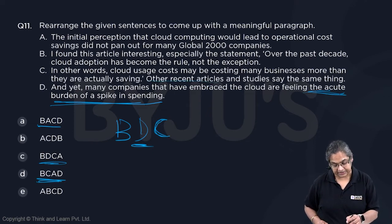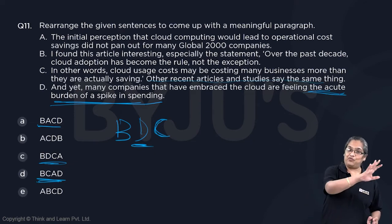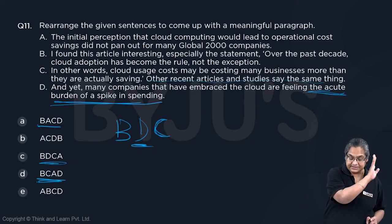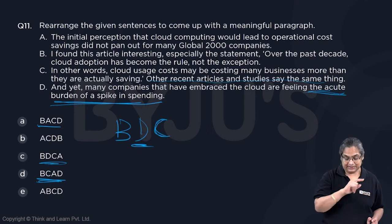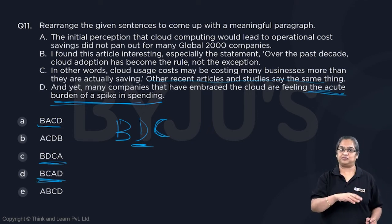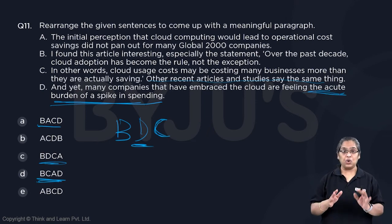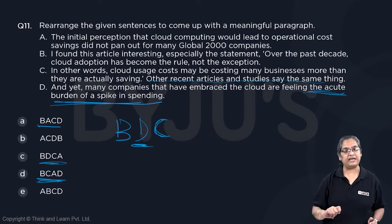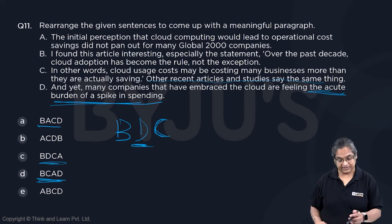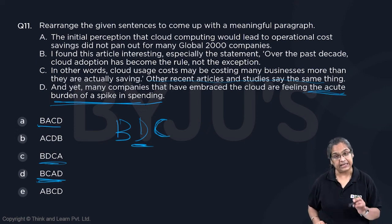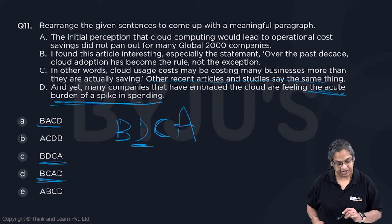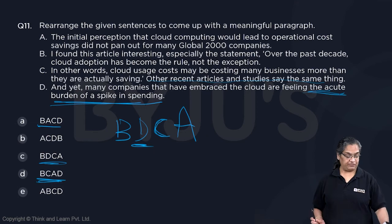Other recent articles and studies say the same thing. First, B introduces the article — cloud adoption is the rule. Then D says there's a spike in spending, so companies may be spending more than initially thought. C explains this further, and this has been confirmed by many companies too. The initial perception has been proved wrong. Therefore, the correct answer is B, D, C, A.